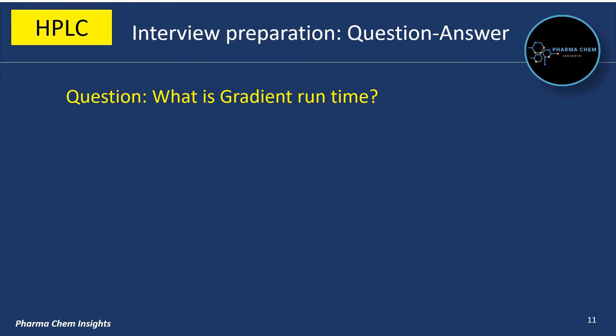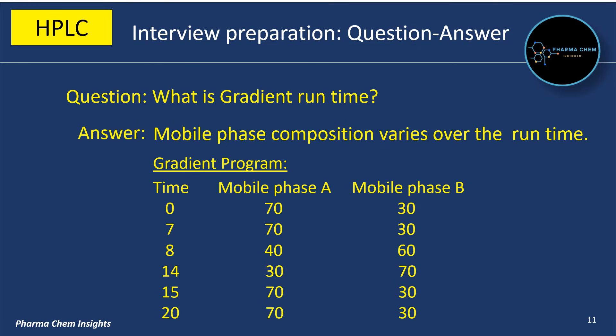What is gradient run time? In gradient run time, the mobile phase composition varies over the run time. For example, in a gradient program method of 20 minutes: from time 0 to 7 minutes, mobile phase A to mobile phase B ratio is 70:30. At 8 minutes, it changes to 40:60. At 14 minutes, it changes to 30:70. At 15 minutes, it changes to 70:30. And at 20 minutes, it comes back to 70:30 ratio.